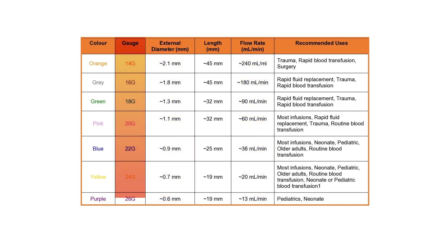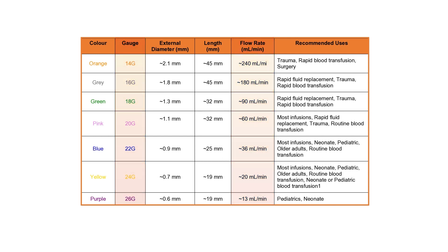The higher the gauge, the lower the flow rate. For example, a 14 gauge IV cannula can pass approximately 240 milliliters of saline per minute, while a 26 gauge IV cannula can pass 13 milliliters per minute.